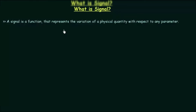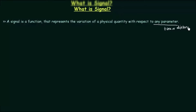A signal is a function that represents the variation of a physical quantity with respect to any parameter. This parameter is the independent quantity and is generally time or distance. The function is definitely dependent upon this independent quantity.